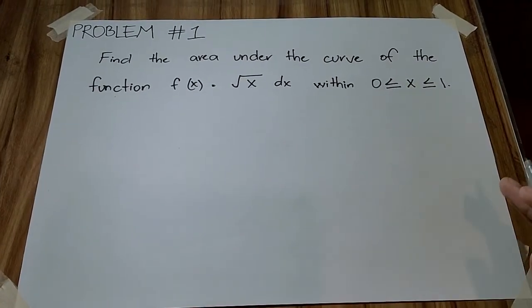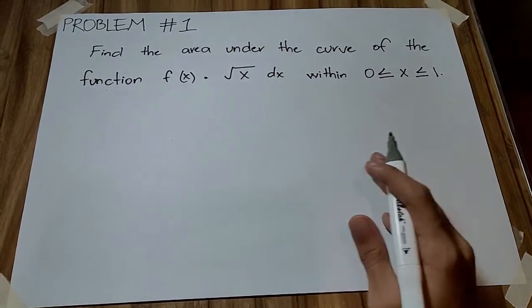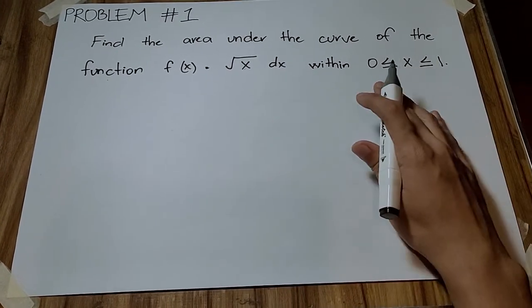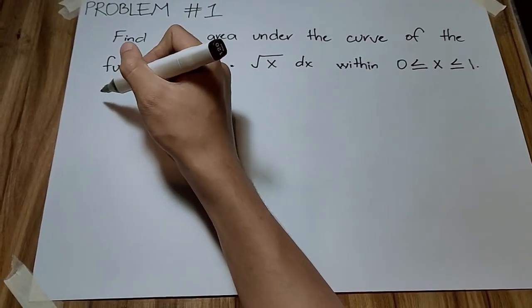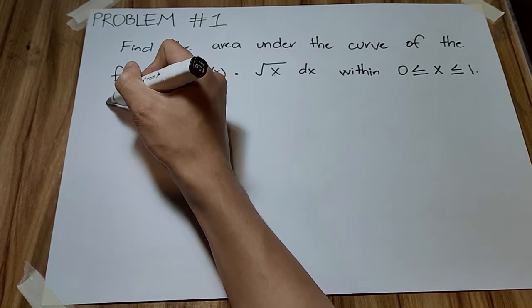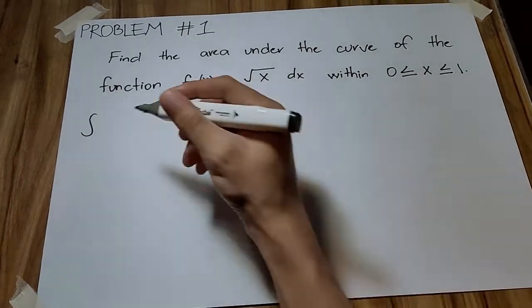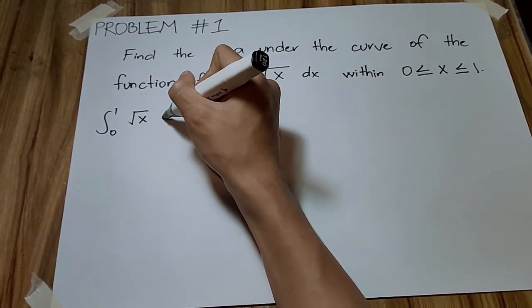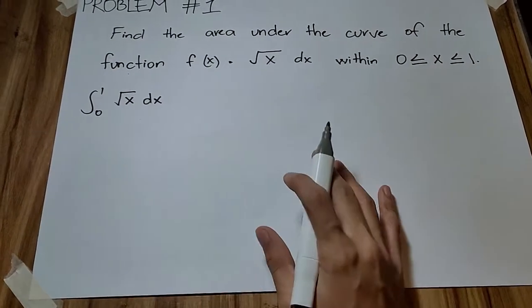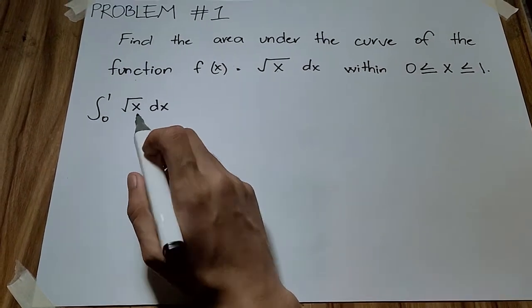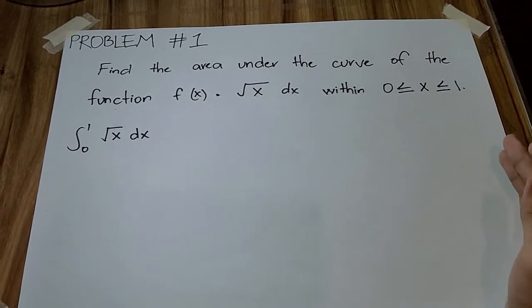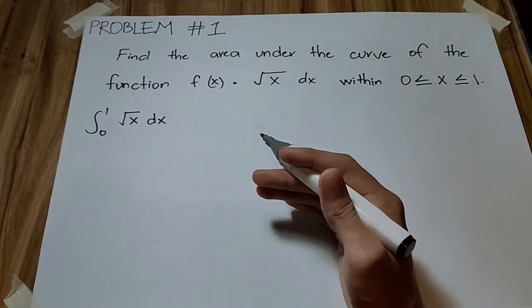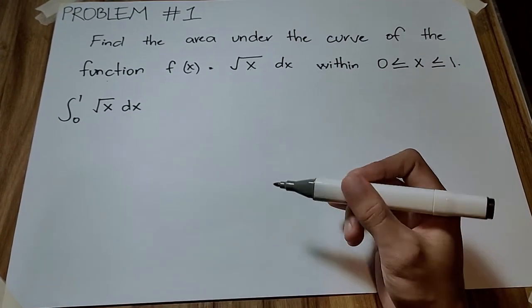Now, let's move to the main problem of this video. The problem is: find the area under the curve of the function f of x equals the square root of x dx, within 0 and 1. Most students get scared easily when they see a square root or a fraction because they always want a constant number, which is much easier. But if we know how to manipulate or simplify the given functions, it will be quite easy to solve.